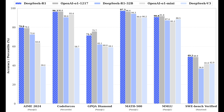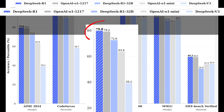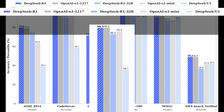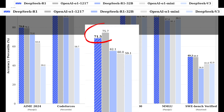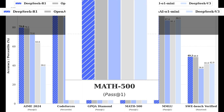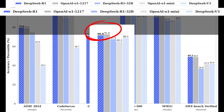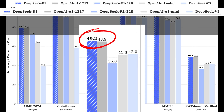Let's see how it stacks up in benchmarks. On the AIME2024 benchmark, DeepSeek R1 surpasses OpenAI O1. On the Codeforces benchmark, the two are almost on par. On GPQA Diamond, it's not as good as OpenAI O1, but very close. On Math500, it beats O1. MMLU is slightly behind, but the gap is small. And on SWE-bench, it's only slightly better.